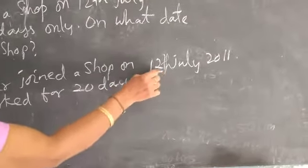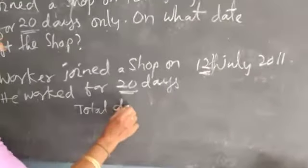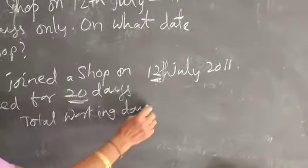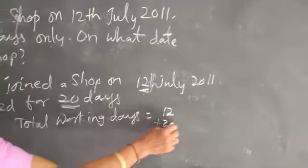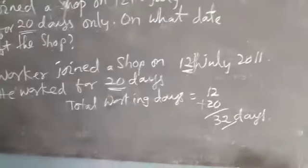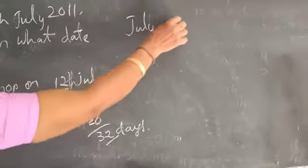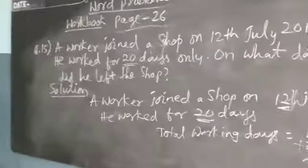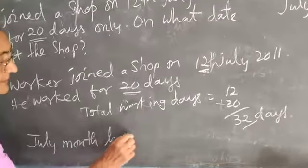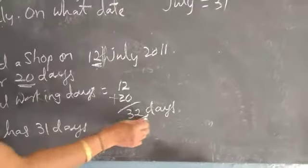Here he started on the 12th. He worked for 20 days. So total working days equal to 12 plus 20, which is 32 days. You know that July has 31 days.